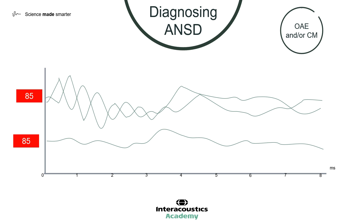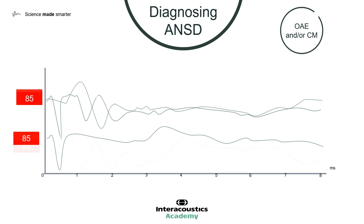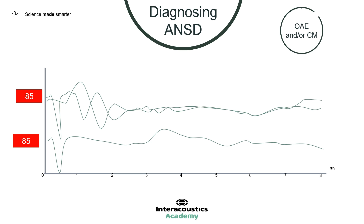Let's take an even closer look at the cochlear microphonic. If we no longer superimpose the two polarity responses, we can see the characteristic mirror image, which can last up to five or six milliseconds. You will not always get multiple cycle repetition as shown here — this could also be termed a ringing response. Often you will get just one cycle, as we can see in the top two traces. You can also see a negative peak in the condensation run and the clamped run. This is a stimulus artifact, but as the cochlear microphonic response is not present in the clamped run, which is the bottom trace, this is still a clear cochlear microphonic.